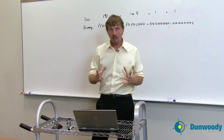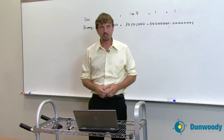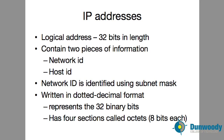The IPv4 address space is a 32-bit space. It contains two pieces of information, and these two pieces are decided by what's known as a subnet mask. Those two pieces are called a host ID and a network ID. It's the subnet mask that determines what part of the address each one is.